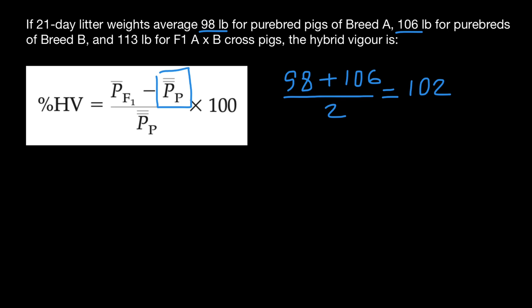And the answer is going to be 102. What we have found? We have found average performance of the parental generation. So we see it twice in our formula. And now we just can finish our calculation.